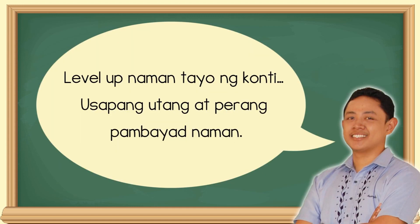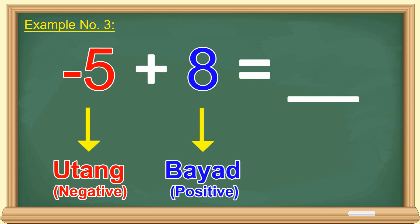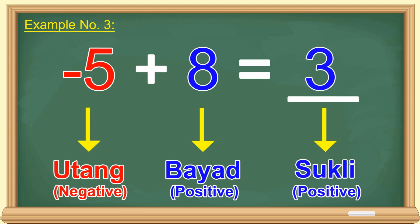Level up naman tayo ng konti. Usapang utang at perang pambayad naman. Negative 5 plus 8 is equal to blank. Negative 5, utang o pera? Utang. Magkano naman ang perang pambayad mo? 8 pesos. Pag binayaran mo na ang utang mo, anong matitira? Utang o sukli? Sukli. Magkano na ang sukli mo? 3 pesos. At dahil sukli, positive 3 yun.